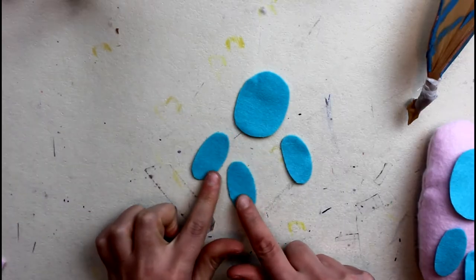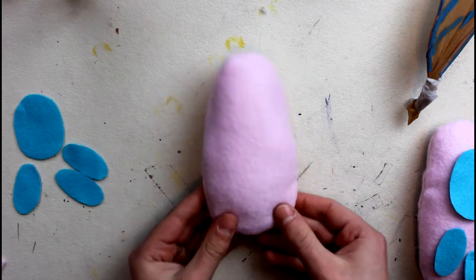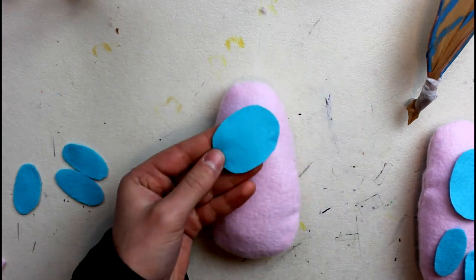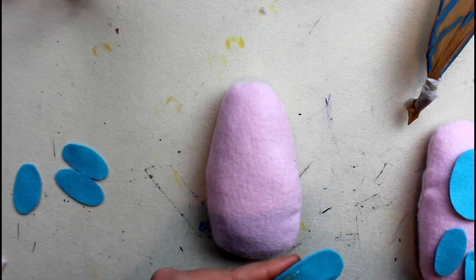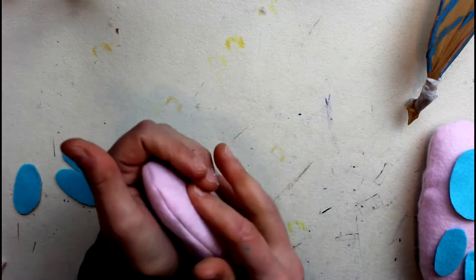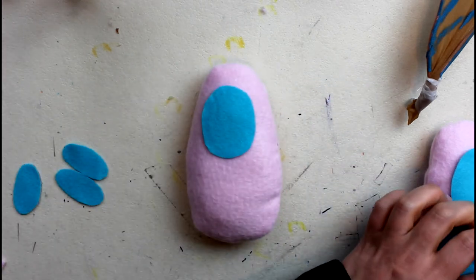For the paw pads I have used this lovely blue felt and I've free-handed everything. I've cut a bigger circle for the bottom pad and then I've cut three ovals for the little pads for the top of their paws. Then I hot glued everything in place and I've done that for the two paws.